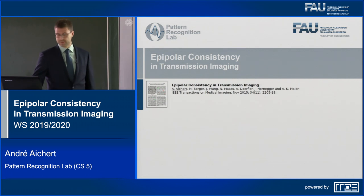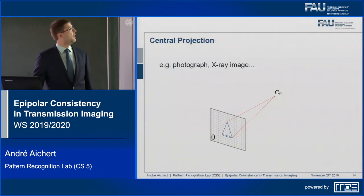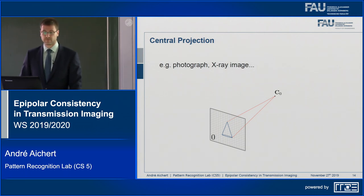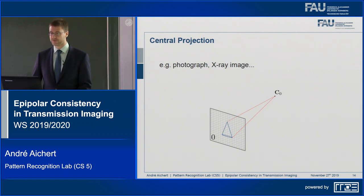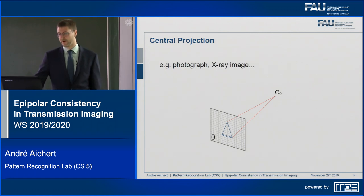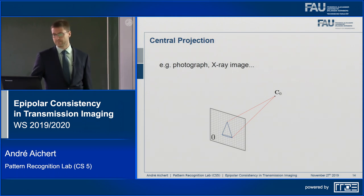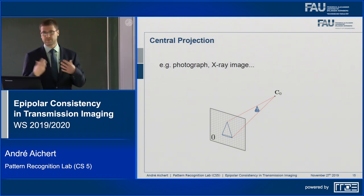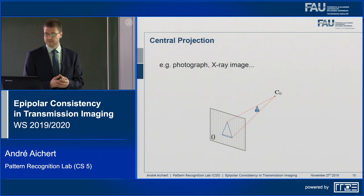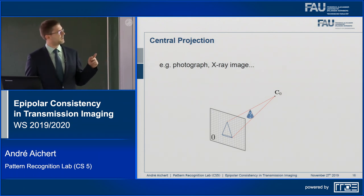Starting with prerequisites — specifically epipolar geometry. Projection for a flat-panel detector x-ray system is basically the same as in a photograph: you have an x-ray source which is like the camera center, and a flat-panel detector which serves as the image plane where x-rays are detected. If you can see a conical shape on the detector, that is because a 3D object in the ray path attenuates some of the radiation — you can think of it as a shadow image.